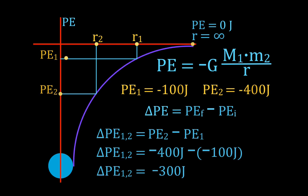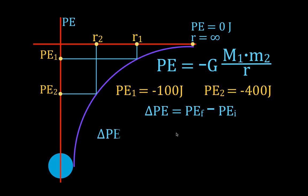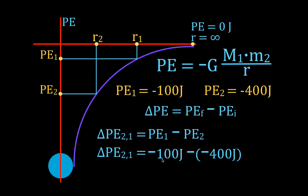Remember, change is always final minus initial. Now we move the object from point 2 to point 1 — away from the Earth's surface. Pe2 is the initial and pe1 is the final: pe1 minus pe2 equals (−100) minus (−400). Minus a minus is a plus, so we get minus 100 plus 400 equals plus 300 joules. When we move away from the Earth's surface, just as in the previous example, we have an increasing potential energy.